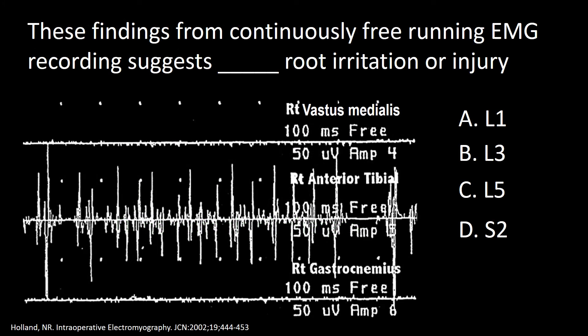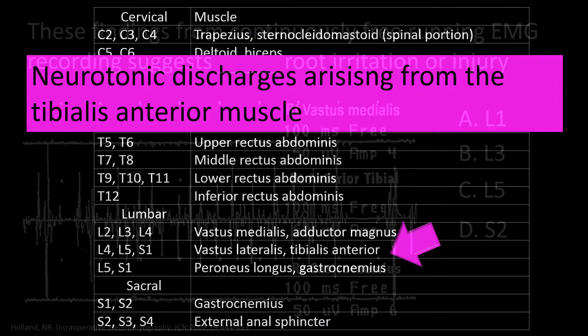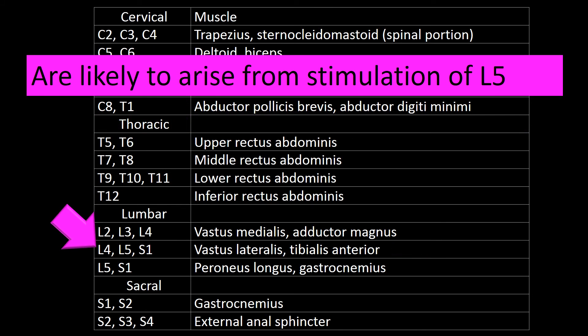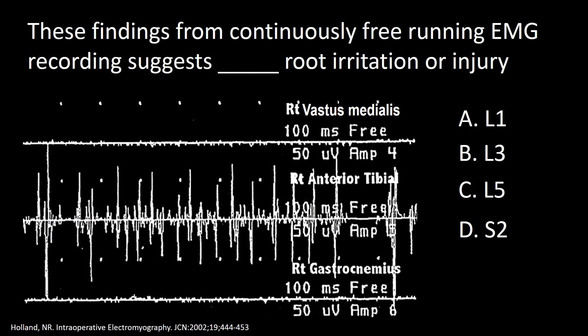Next question: these findings from continuously free-running EMG suggest root irritation — is it A: L1, B: L3, C: L5, D: S2? Neurotonic discharges arising from the tibialis anterior muscle are likely due to a problem related to the fifth lumbar root. So the answer to this question is C.